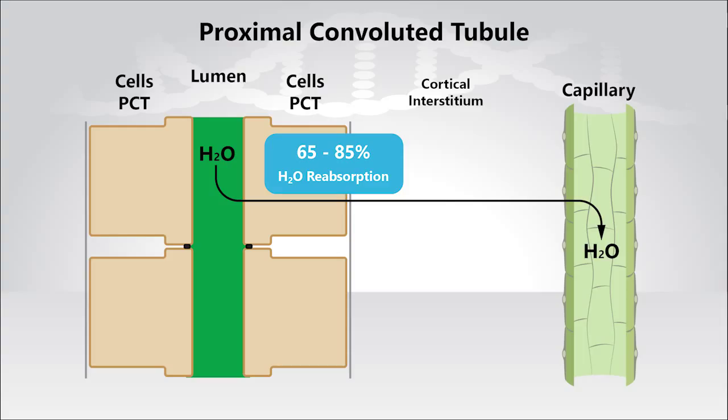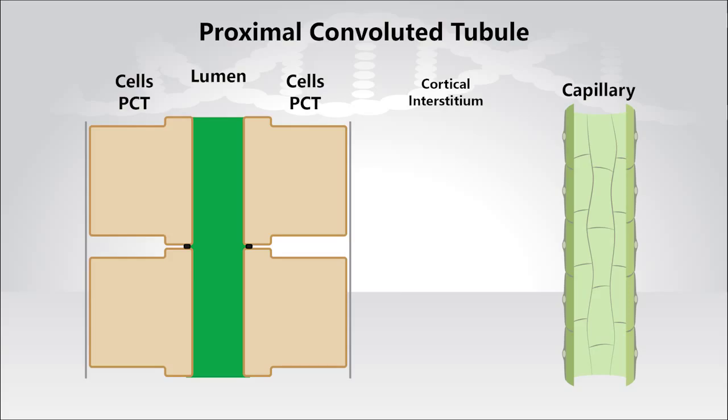So, from this, there appears to be no established cortical interstitial osmotic gradient, well, at least not like the one we see in the medulla. So, how is water reabsorbed along the proximal tubule without an osmotic gradient?